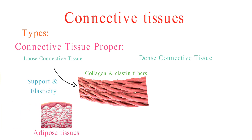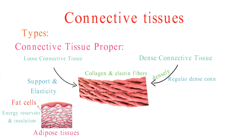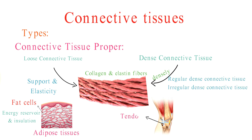Adipose tissue, a type of loose connective tissue, is primarily composed of fat cells and serves as an energy reservoir and insulation. Dense connective tissue, on the other hand, is densely packed with collagen fibers and can be further categorized into regular and irregular dense connective tissue.